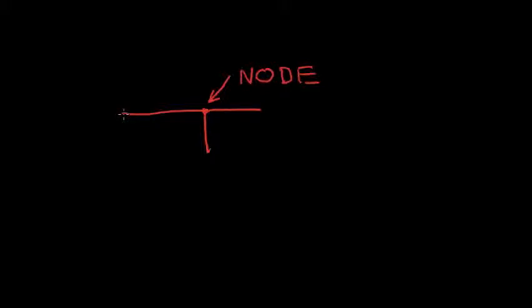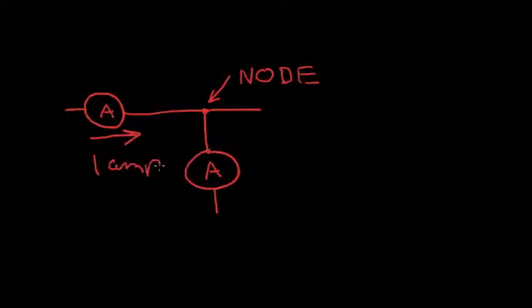Let's say that we put an ammeter in this branch. We'll call this A for ammeter. An ammeter is just a device that measures current flow. Let's say we put another ammeter in this branch. Let's say that the ammeter on the left measures a current flow towards the right of one amp. Let's say the ammeter at the right measures a current downward at one half amp.